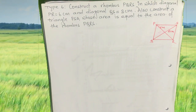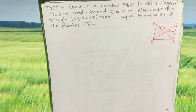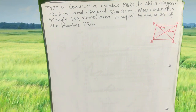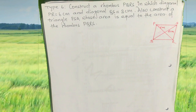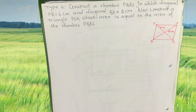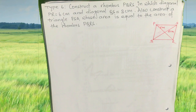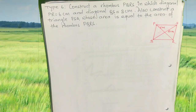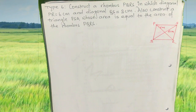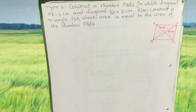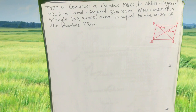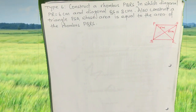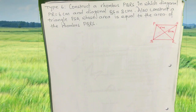I will tell you about construction type 6 question. The question is: construct a rhombus PQRS in which diagonal PR is equal to 6 cm and diagonal QS is equal to 8 cm. Also construct triangle PSA whose area is equal to the area of rhombus PQRS.